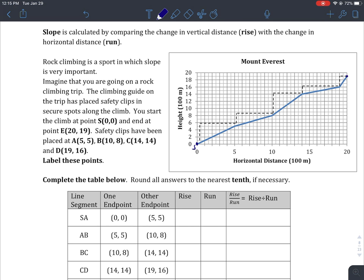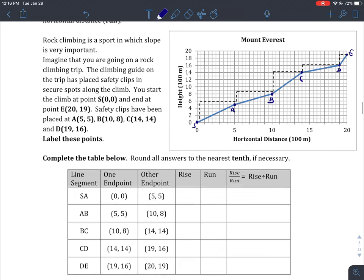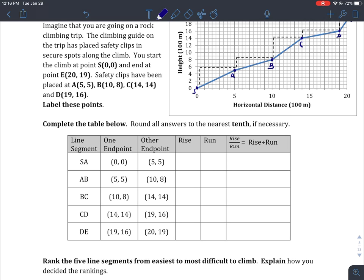We have to start out by placing our points along the line. A is (5,5), B is (10,8), C is (14,14), and D is (19,16). So there's all the points.